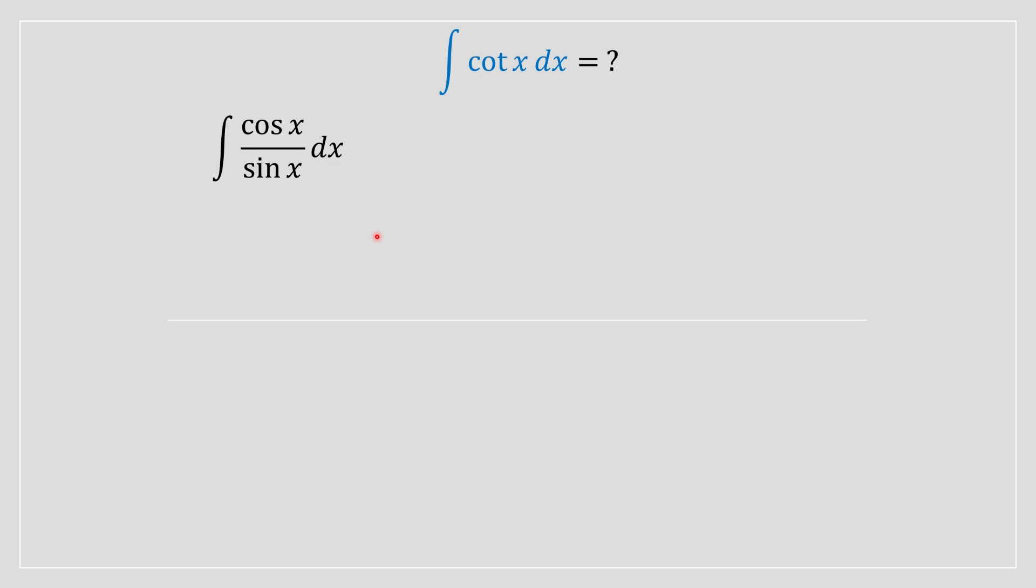Once it's been written in this form, we can then apply a technique from calculus 2 known as u-substitution. We're going to take u to be equal to sin(x), and once we have done that we basically then take the derivative on both sides of this equation.